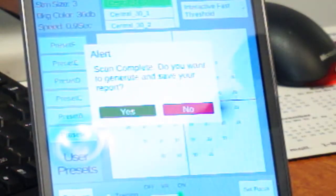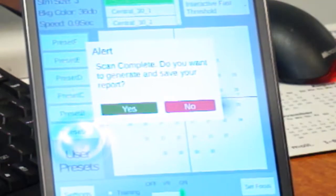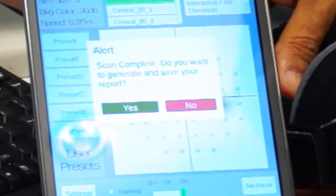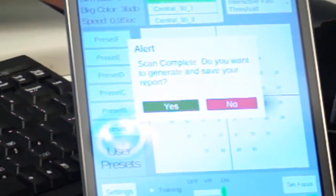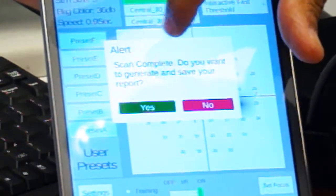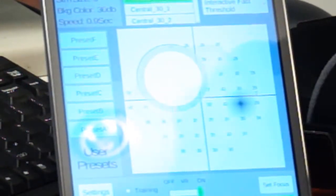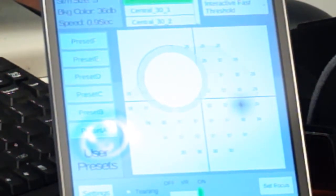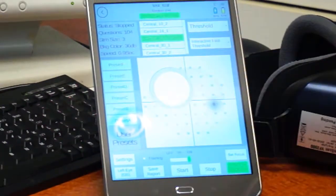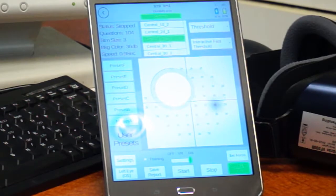So here I am done. And the machine is asking, the controller now has received the data and is asking, scan completed. Do you want to generate and save your report? Yes. At this time a PDF report is being generated and as soon as the PDF report is generated, as I said, if you connect it to the internet, it will be sent via the internet to your account and you'll be able to see the report.